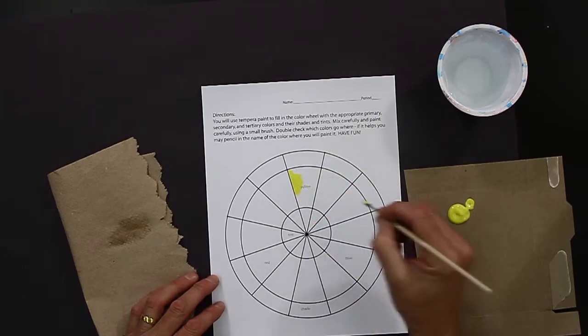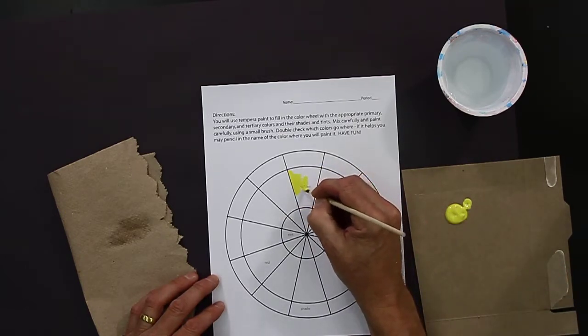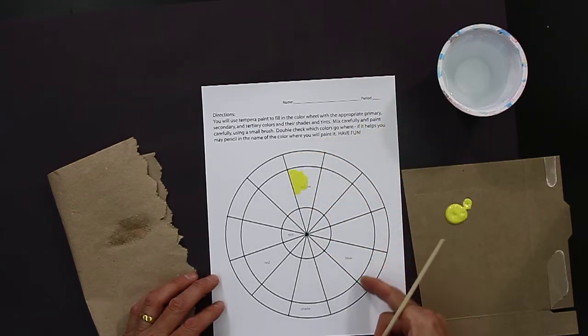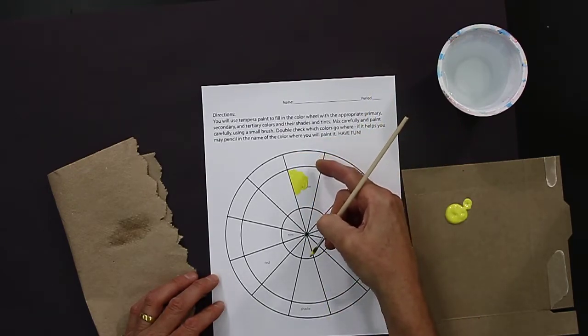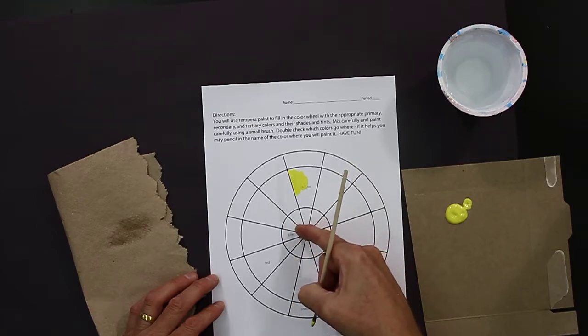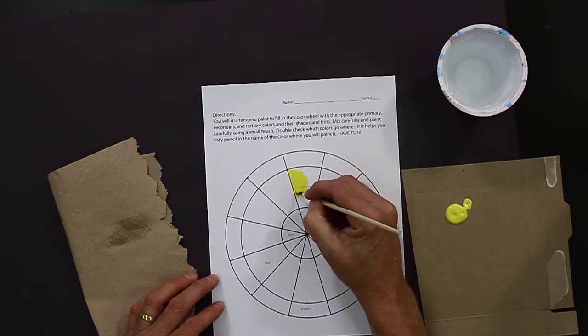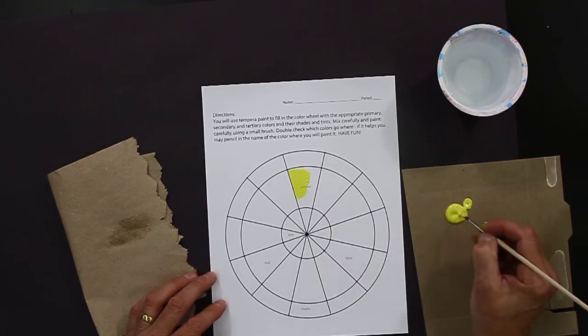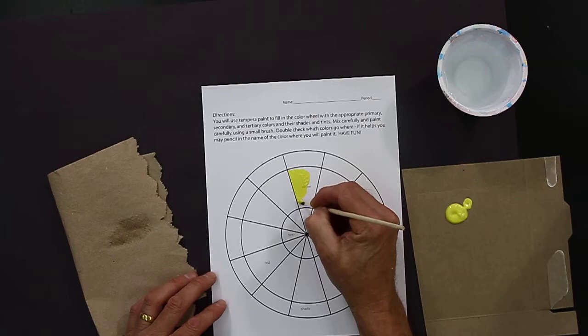We're going to do the color in the center part of the pie slice in the wheel, and on the outer rim of the pie slice we're going to create a shade of the color, and on the inner part of the pie slice we're going to create a tint of the color. We create tints of colors by adding white to the paint and we create shades of colors by adding black to the paint.